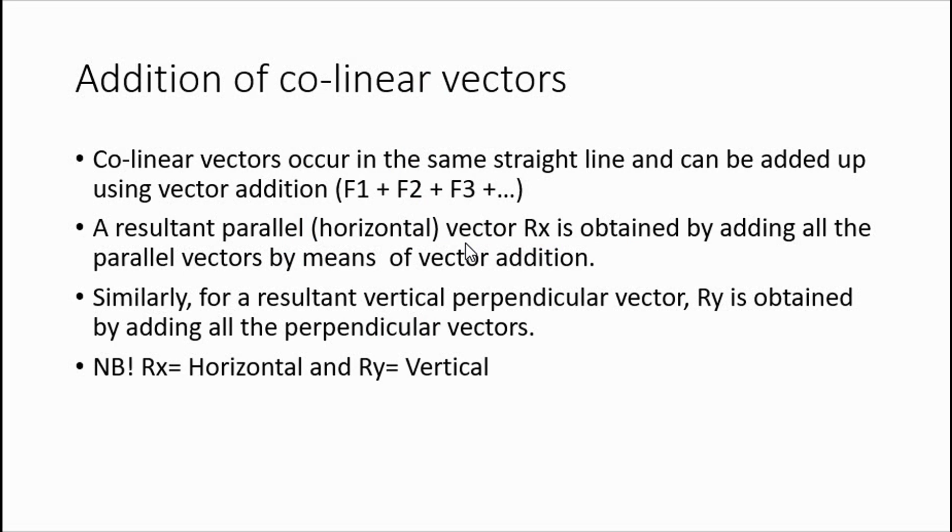Now, let's go to the addition of collinear vectors. Collinear vectors occur in the same straight line and can be added up using vector addition. A resultant parallel horizontal vector, Rx, is obtained by adding all the parallel vectors by means of vector addition.